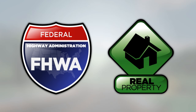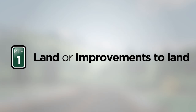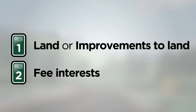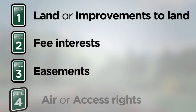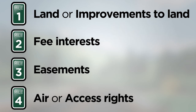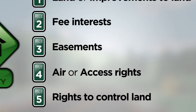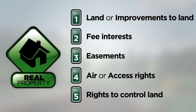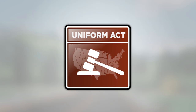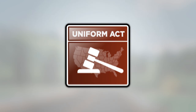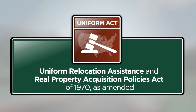Real property is a term used to describe land, improvements to land, fee interests, easements, air or access rights, or the rights to control land, such as leases. The primary law governing right-of-way acquisition and relocation activities on Federal-aid projects is referred to as the Uniform Act, short for the Uniform Relocation Assistance and Real Property Acquisition Policies Act of 1970, as amended.